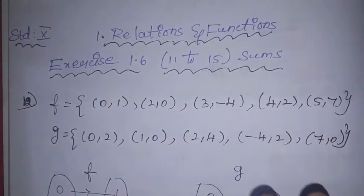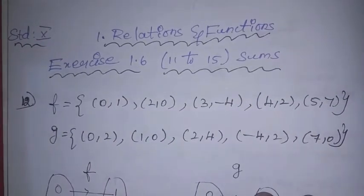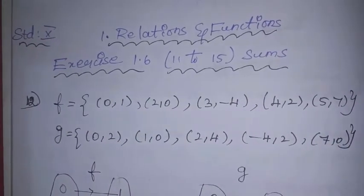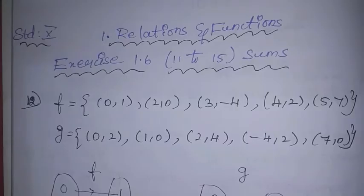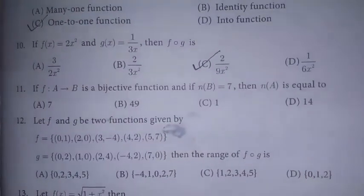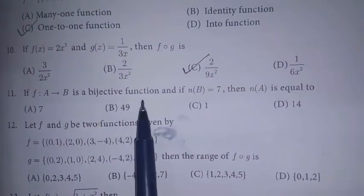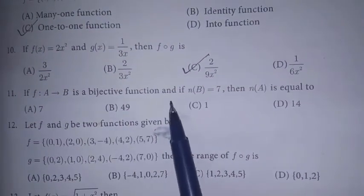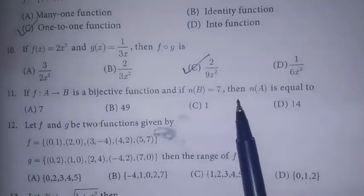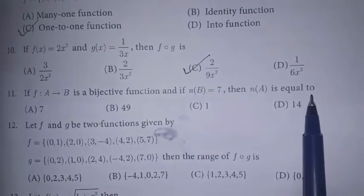Hello students, welcome to 1 Plus 1 channel. In this video, 10th standard, chapter 1, exercise 1.6, sums 11 to 15. For the 11th sum: if f is a bijective function from A to B, and n(B) = 7, then n(A) equals dash.